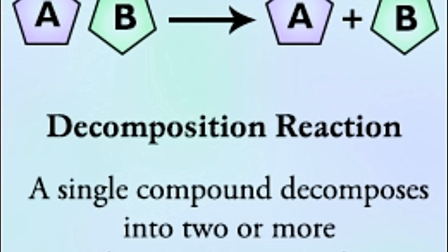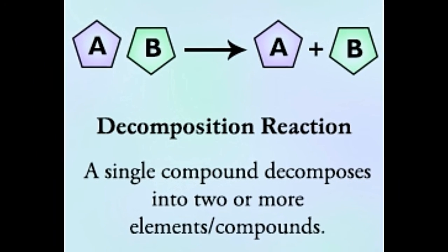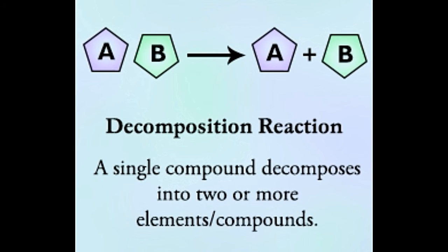Copper chloride on decomposition forms copper and chlorine gas. CuCl2 yields Cu plus Cl2. Calcium carbonate disintegrates into calcium oxide and carbon dioxide. CaCO3 yields CaO plus CO2.